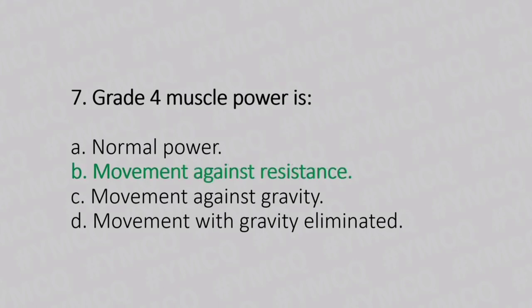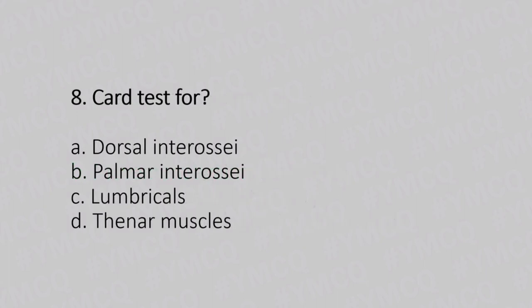Now let's move to question number 8. Card test for. Option A: dorsal interossei. Option B: palmar interossei. Option C: lumbricals. Option D: thenar muscle. And the answer is Option B, palmar interossei.